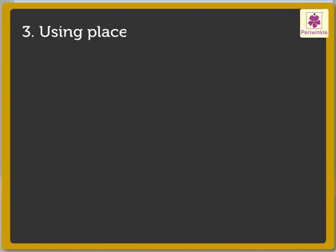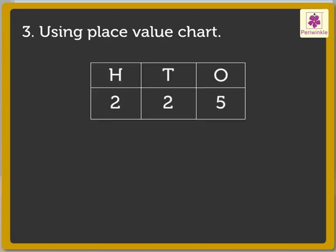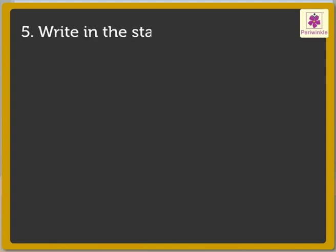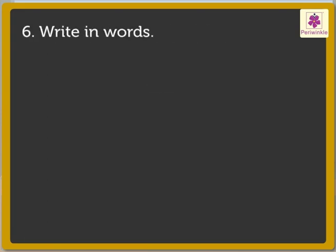It can be written using the place value chart as shown. Next, it can be written in expanded form like this: 200 plus 20 plus 5. We can also write it in standard form, and finally it can be written in words as two hundred and twenty-five.